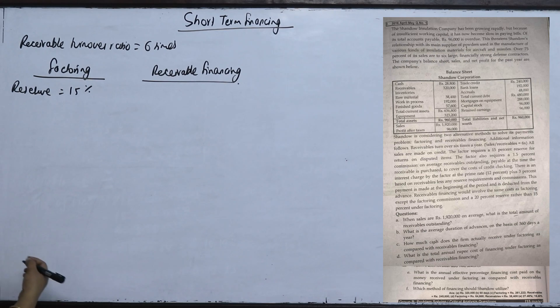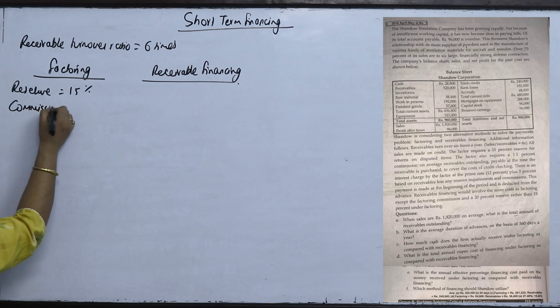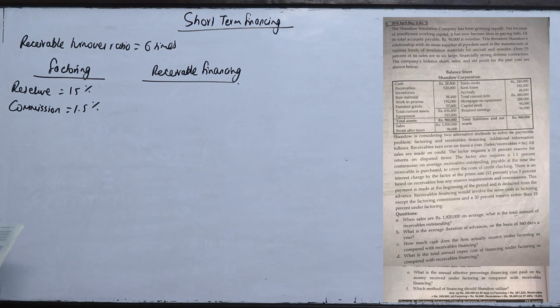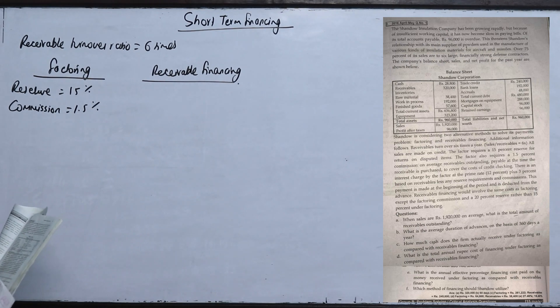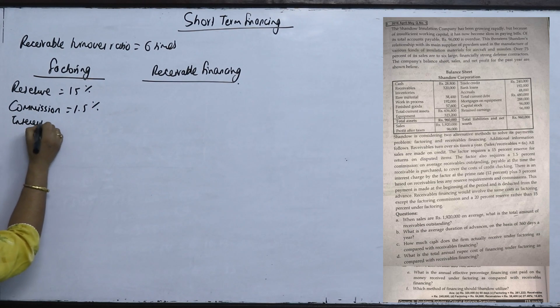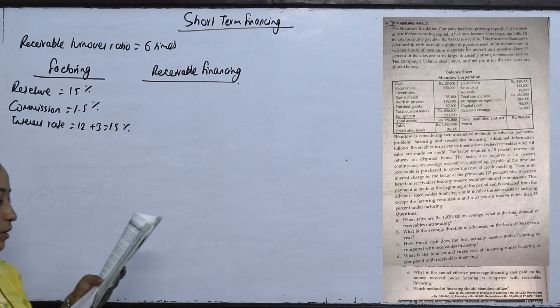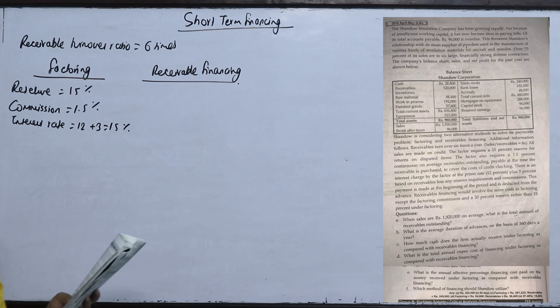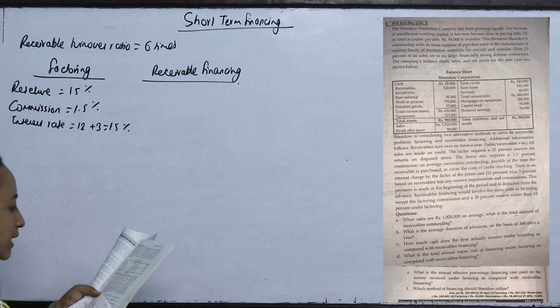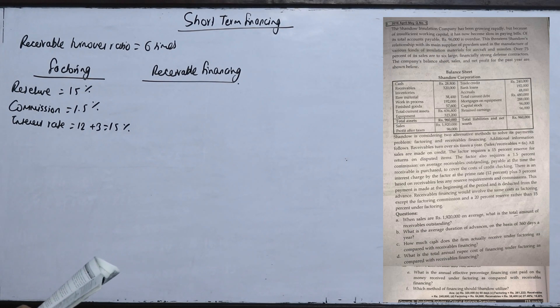The factor also requires a 1.5% commission on average receivable outstanding, payable at the time the receivable is purchased, to cover the cost of credit checking. There is an interest charge by the factor at the prime rate plus 3%. The interest rate is 12% plus 3%, which equals 15%, based on receivables less any reserve requirement and commission.